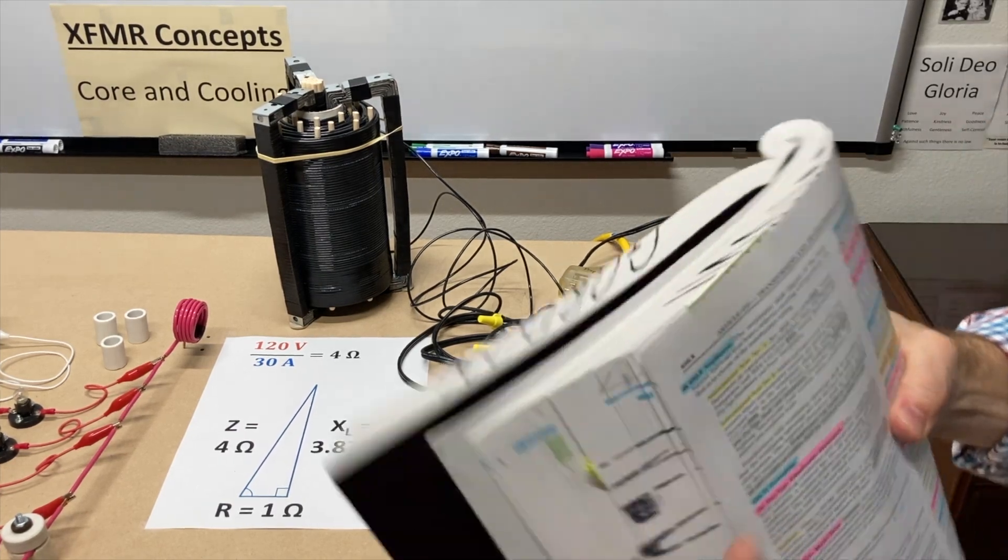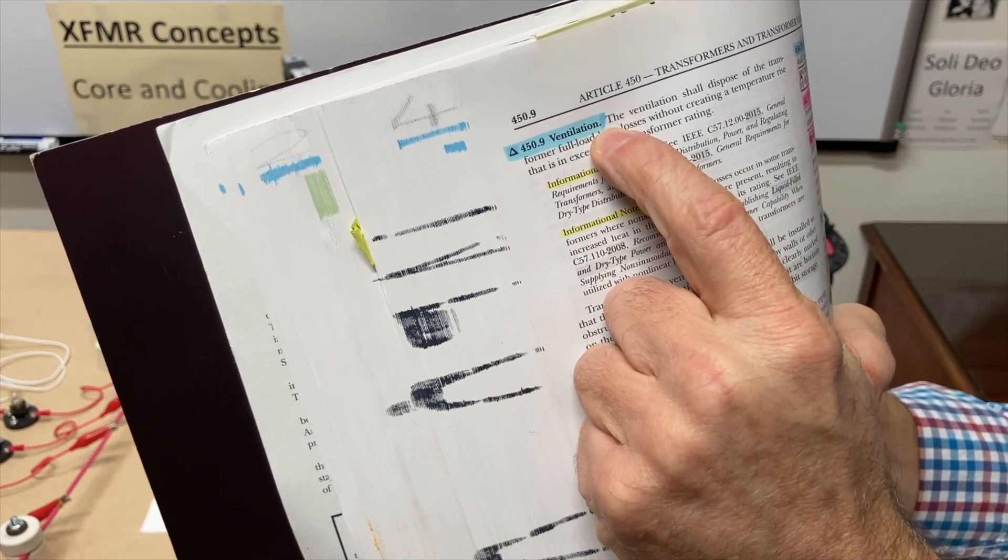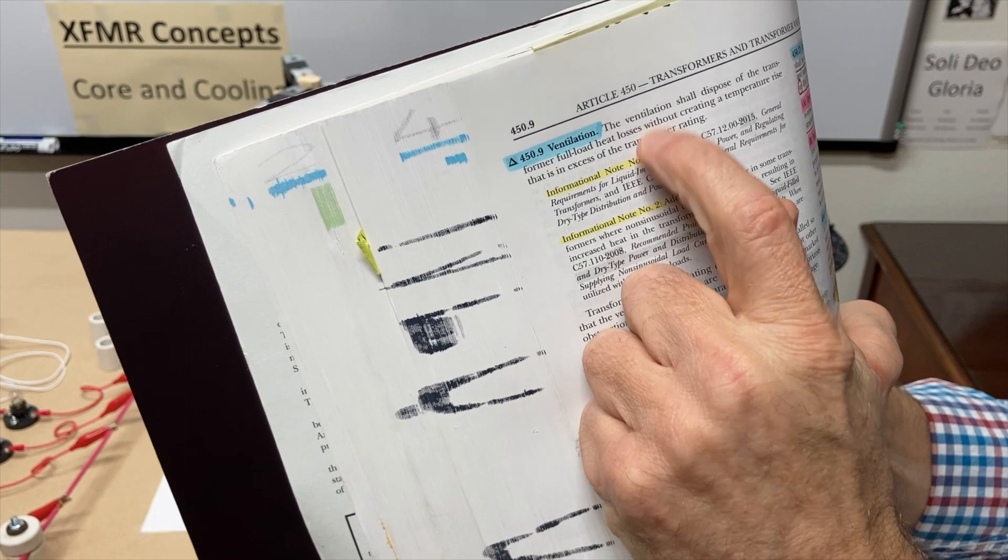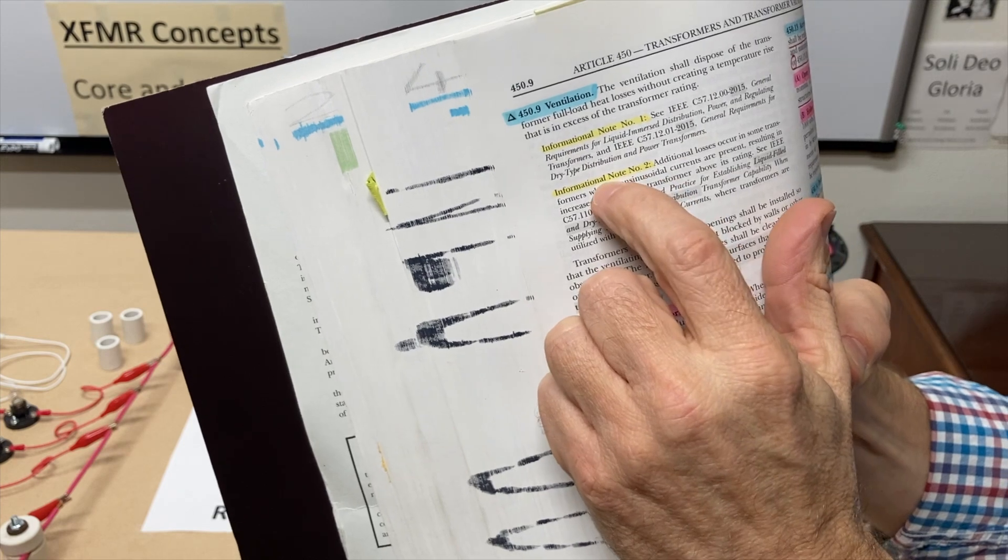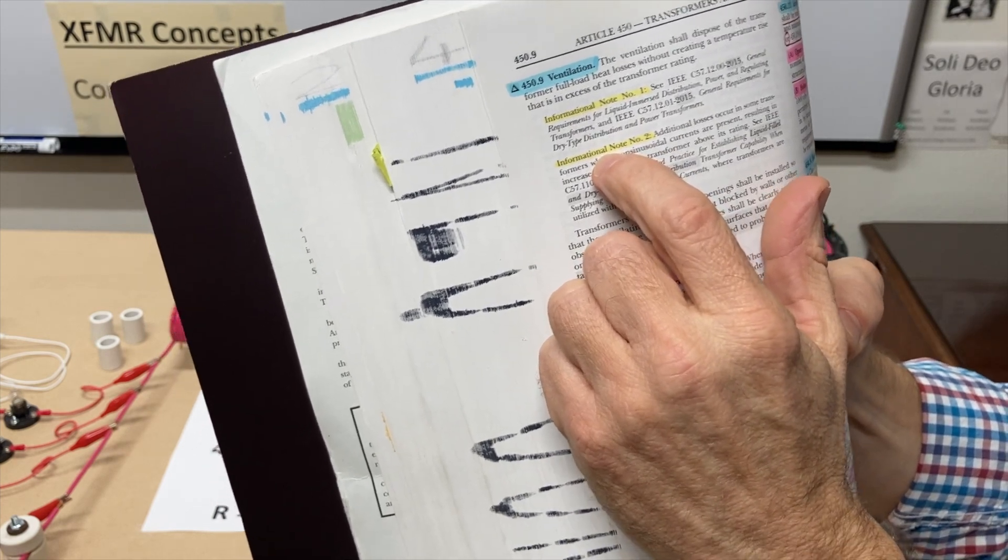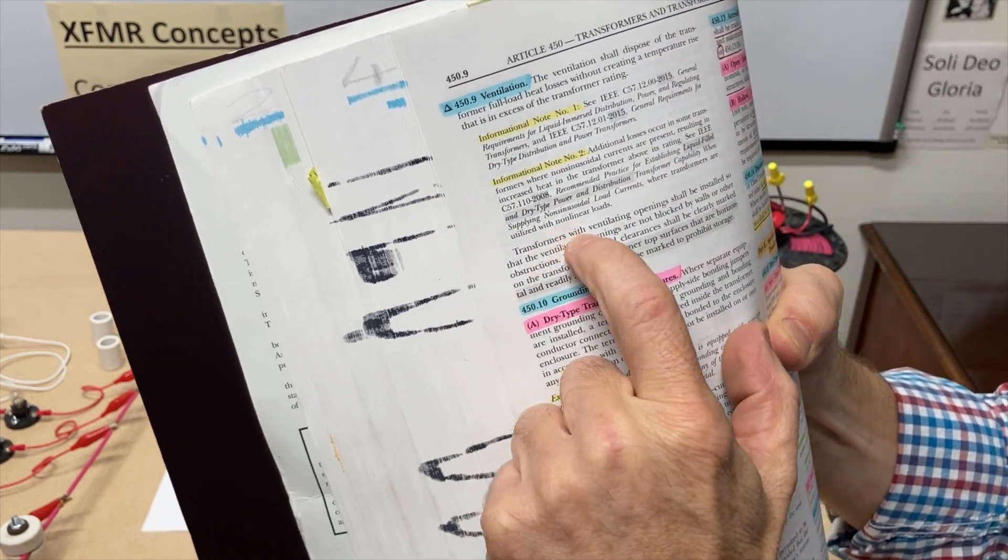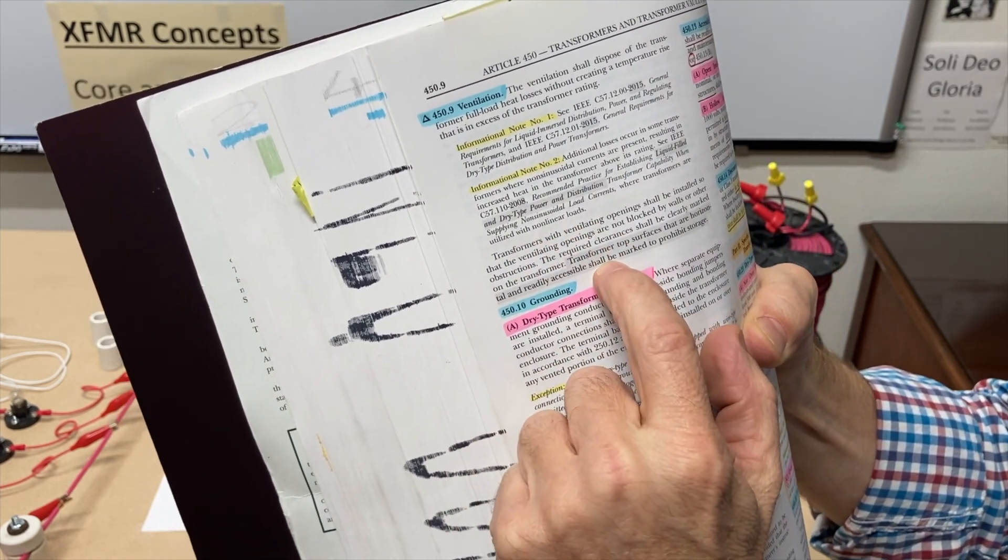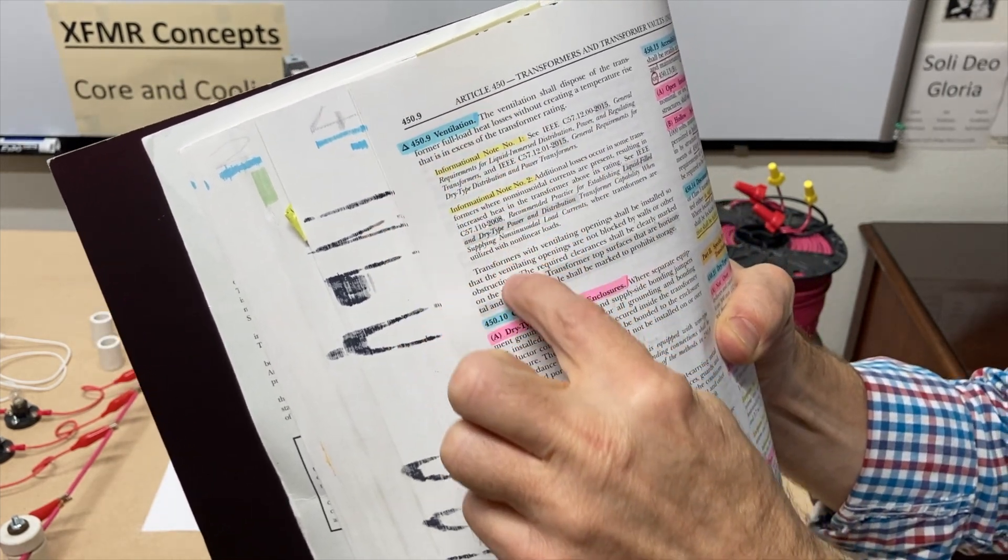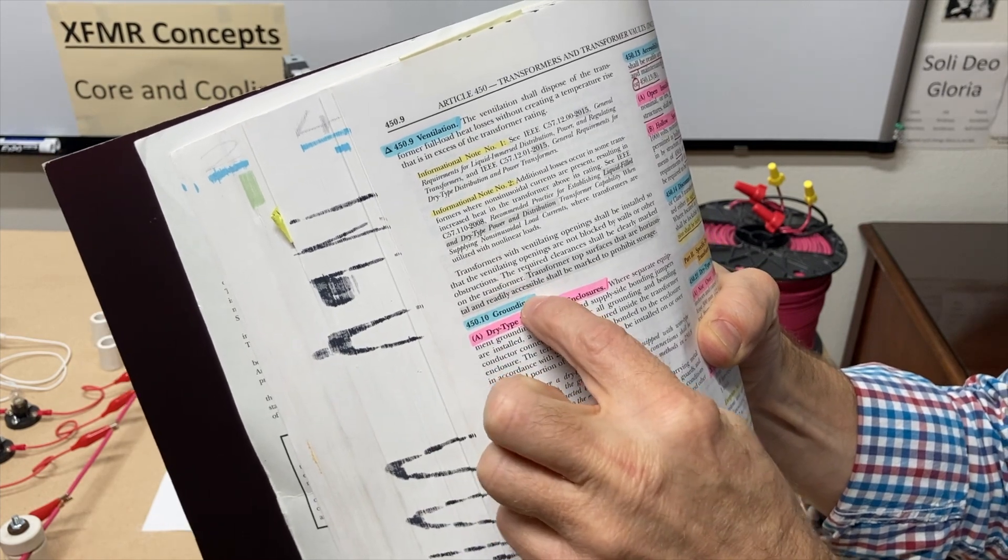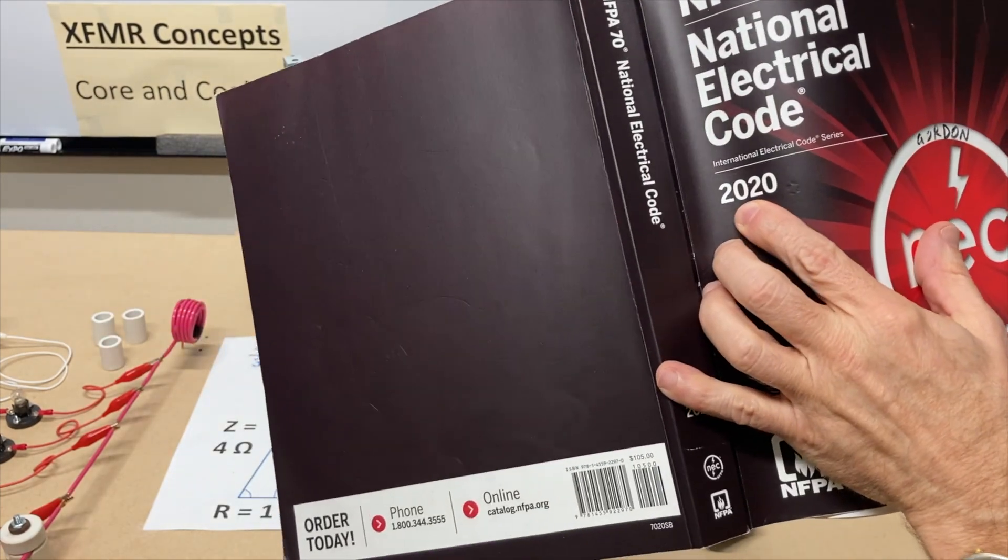So I want to show you something about cooling in the code or rather ventilation. A couple of points I want to make here just quickly on 450.9 on ventilation. Now, there's one sentence here. I'll let you read it later on your own. But is that all there is to this section? Because it jumps to the informational notes. Well, one of the lessons here is you're never done with a code section until you get to the next one. Because there's three more important sentences down below. These info notes apply up here. Or if you have exceptions, always read through till you get to the next section.